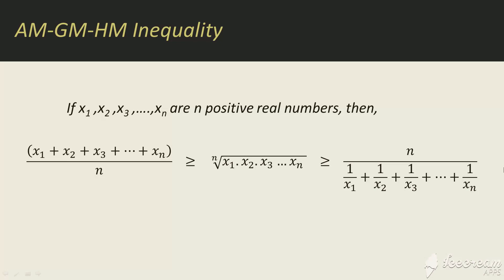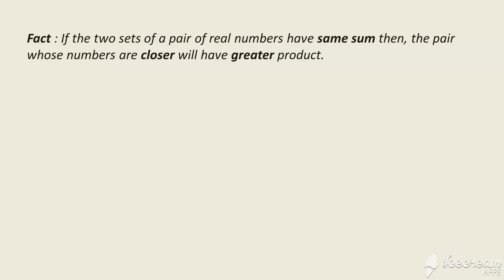Today we will be looking at its proof. Before jumping into the proof, I would like to discuss a fact which we will be using. The fact is: if we have two pairs of real numbers and those two pairs have the same sum, then the pair which has numbers closer to each other will have the greater product.